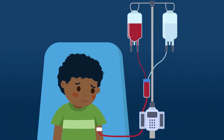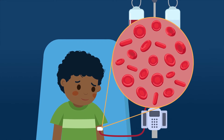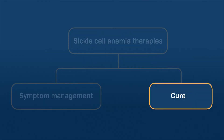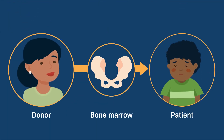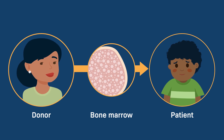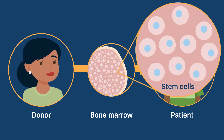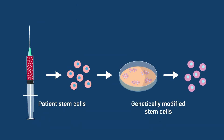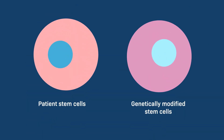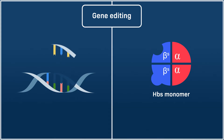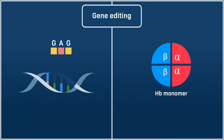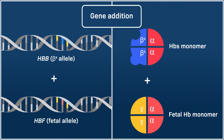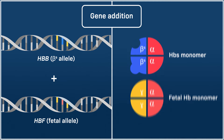Blood transfusion is also used as needed to replace sickle red blood cells with healthy ones. Curative strategies for sickle cell anemia include bone marrow transplant to provide patients with hematopoietic stem cells containing healthy beta-globin genes. In addition, gene therapies hold promise to address the genetic cause of sickle cell anemia by reverting thymine back to adenine in the beta chain of adult hemoglobin, or reactivating fetal hemoglobin production to replace the mutated beta-globin in adults.